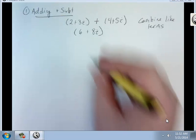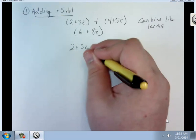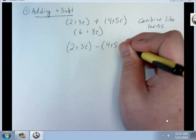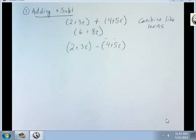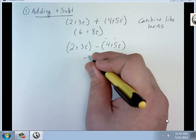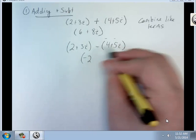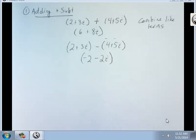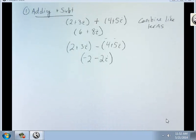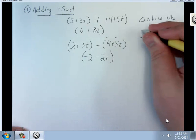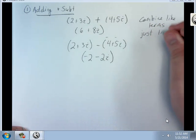So, 2 plus 3i minus 4 plus 5i. Go through and change the signs like we would normally do. 2 minus 4 is negative 2, 3i minus 5i is minus 2i. Combine like terms, just like polynomials.